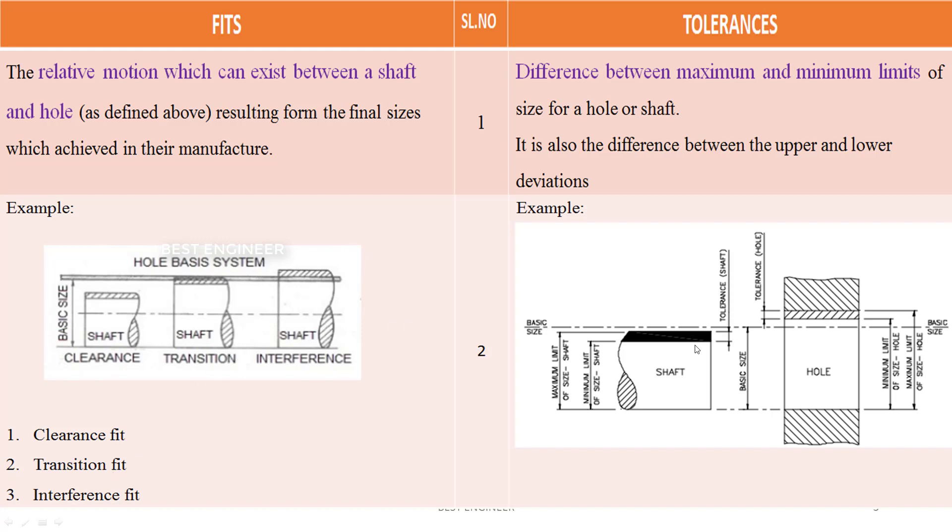Let me see the tolerance here. This is the shaft. This black color indicates the allowances, upper limit and lower limit. Let me take the hole as the example here. This is the basic size and upper limit and lower limit.